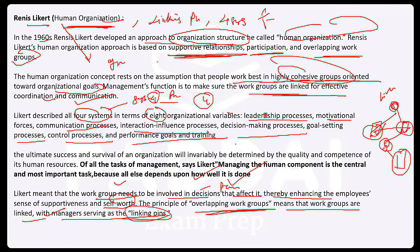Likert's four systems are: exploitative authoritative, benevolent authoritative, consultative, and participative democratic.